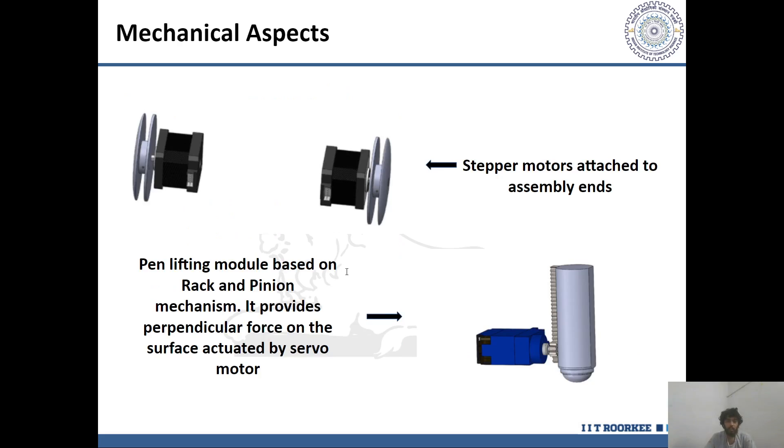As far as the mechanical components are concerned, rack and pinion sort of mechanism as we can see here is used for the servo motors, so that it can provide the perpendicular force on the surface and the stepper motor shafts are directly connected to the assembly ends.